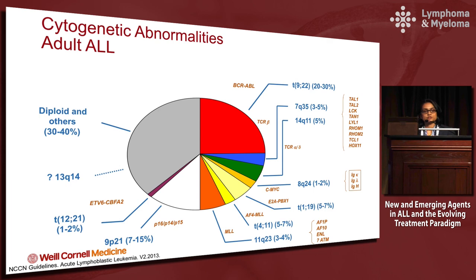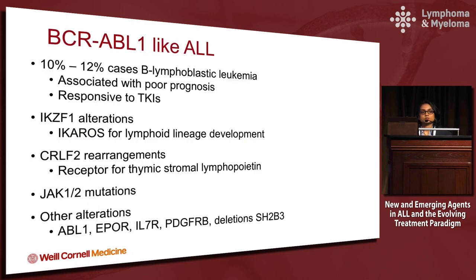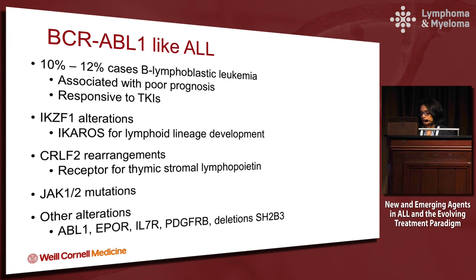Here's the spectrum of cytogenetic abnormalities in ALL. In adult ALL, translocation 9;22, or the Philadelphia chromosome, is present in about 20 to 30 percent and is associated with poor risk. So is translocation 4;11. Complex karyotype is the other major subcategory. I'd like to draw attention to BCR-ABL-like ALL — patients who do not have the Philadelphia chromosome, but have FISH-positive genes IKZF1, CRLF2, and PDGFR — all associated with response to TKIs, making up 10 to 12 percent of B-cell ALL and associated with poor risk. It is not standard of care yet to combine chemotherapy with TKIs, but it's important to recognize this as a subcategory.